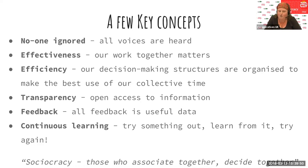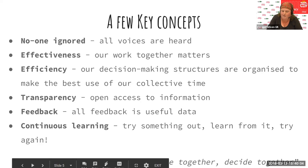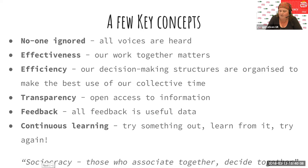The key phrase from sociocracy is 'good enough for now and safe enough to try.' That's a really useful mantra for getting the mindset of all of this. A little definition: for sociocracy, those who associate together decide together. So as with democracy and autocracy, the socios are the people associating together.